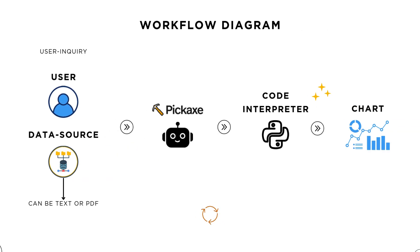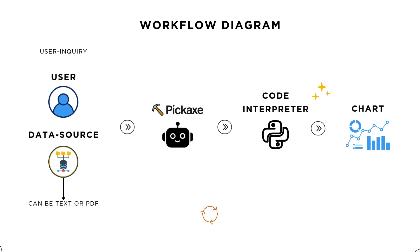This is our workflow diagram. We're going to think about the end user — the end user comes into our pickaxe with their data source that they wish to visualize into a chart. That user inquiry is given to the pickaxe, which forwards it to the connected action, in this case the Code Interpreter. The Code Interpreter does its magic behind the scenes, a chart is generated, and this cycle can repeat until the user is satisfied.